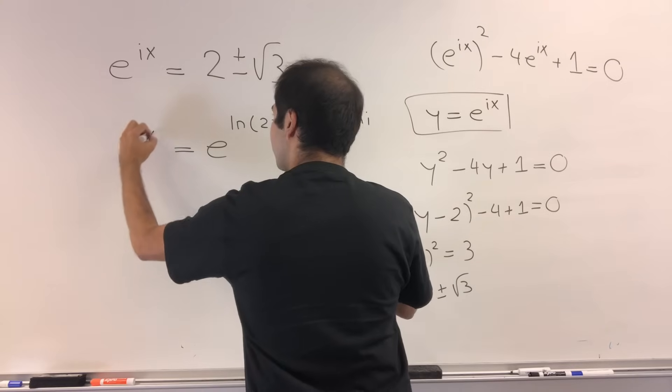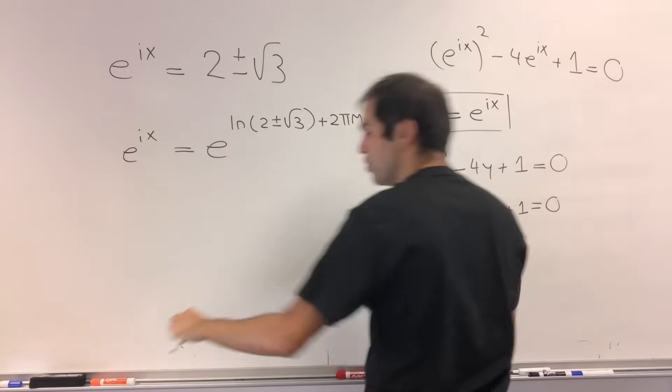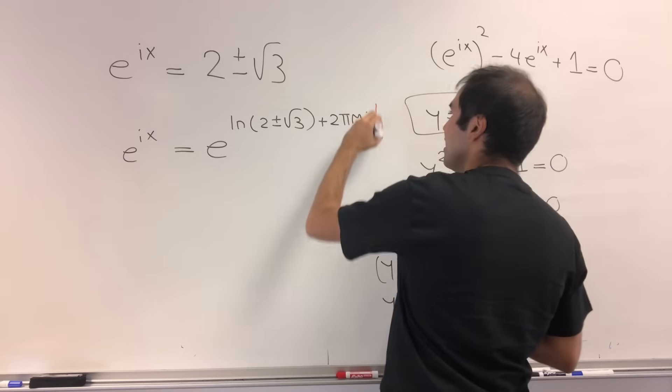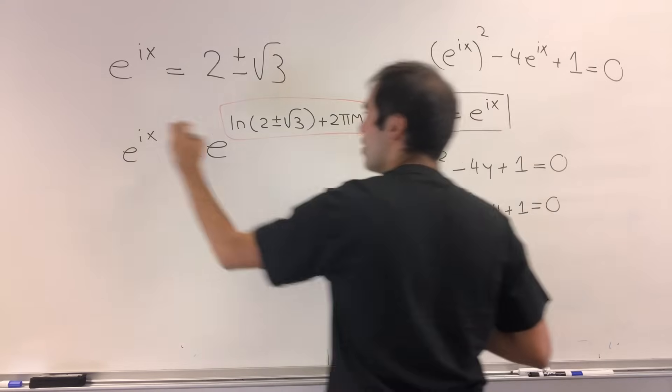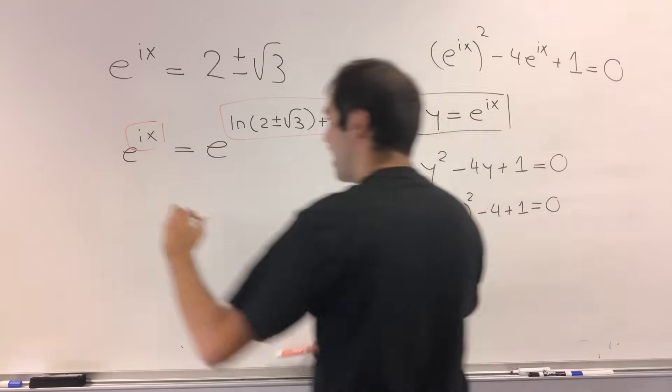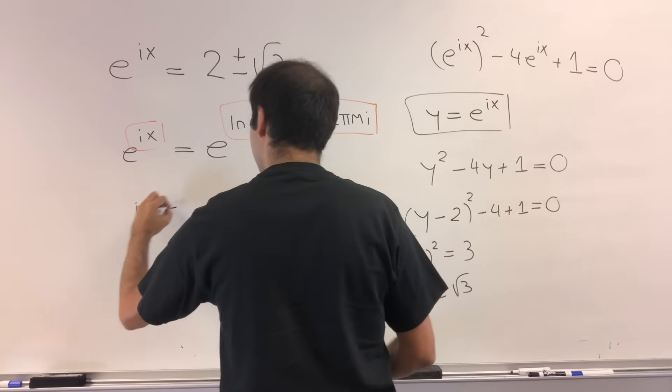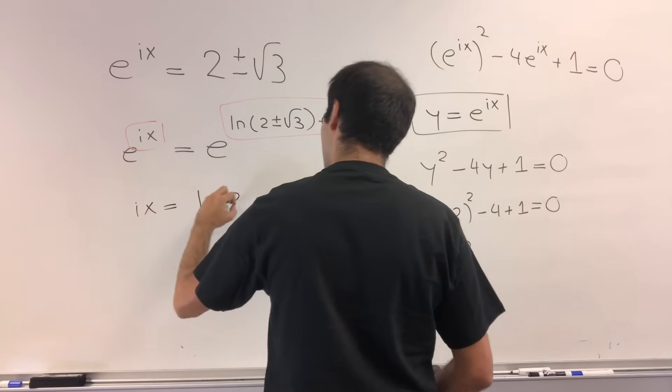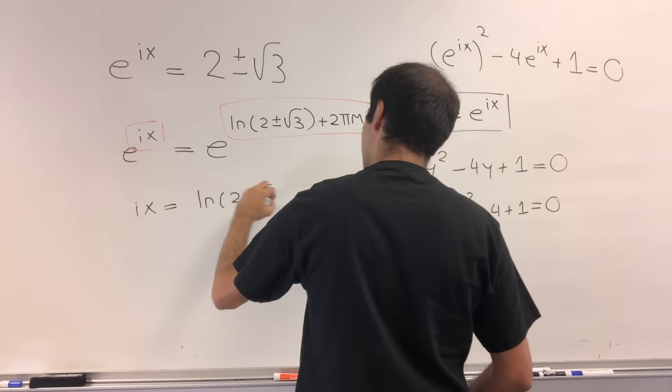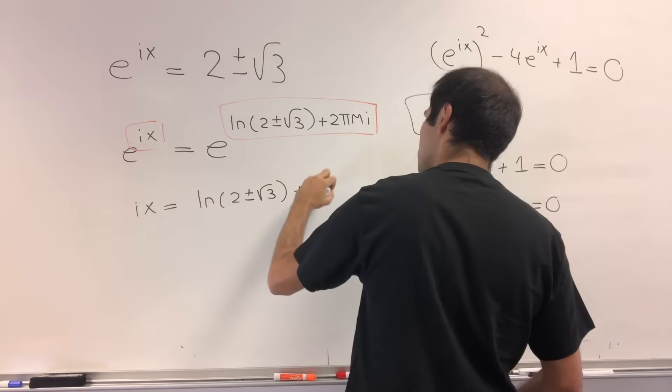So what we get is e to the ix equals e of this shebang. And now we can just simply equate the exponents to then get that ix equals ln of 2 plus or minus square root of 3 plus 2 pi mi.